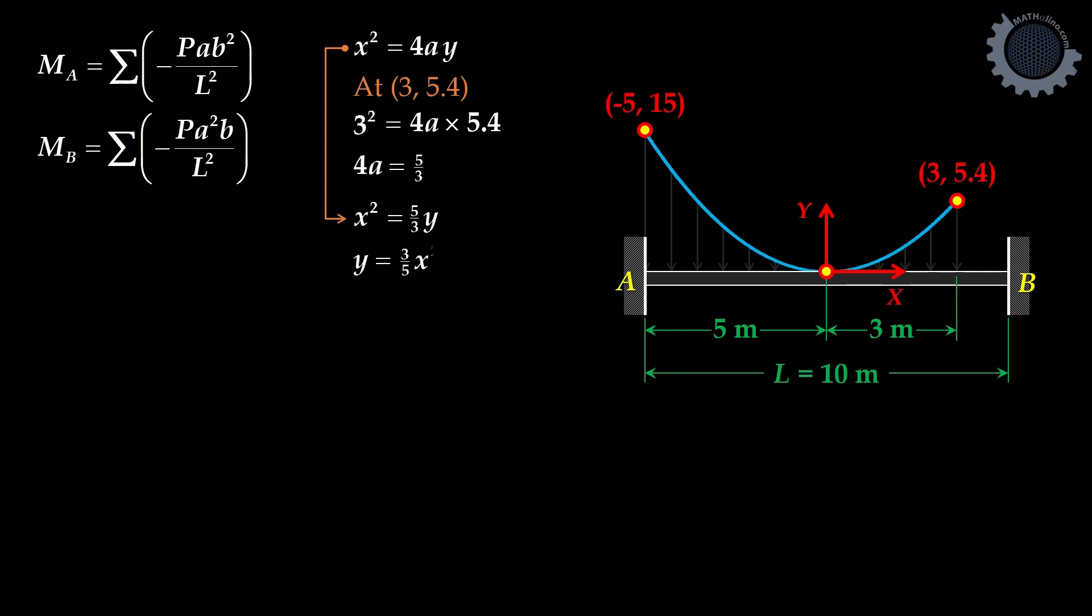Solve for Y, that is 3 fifths of X squared. The concentrated load therefore is P equals 3 fifths of X squared DX.